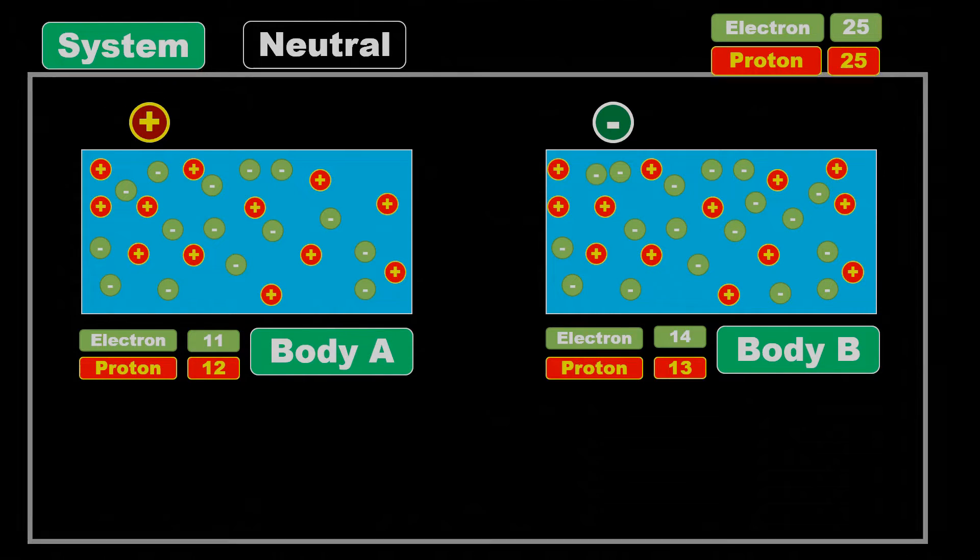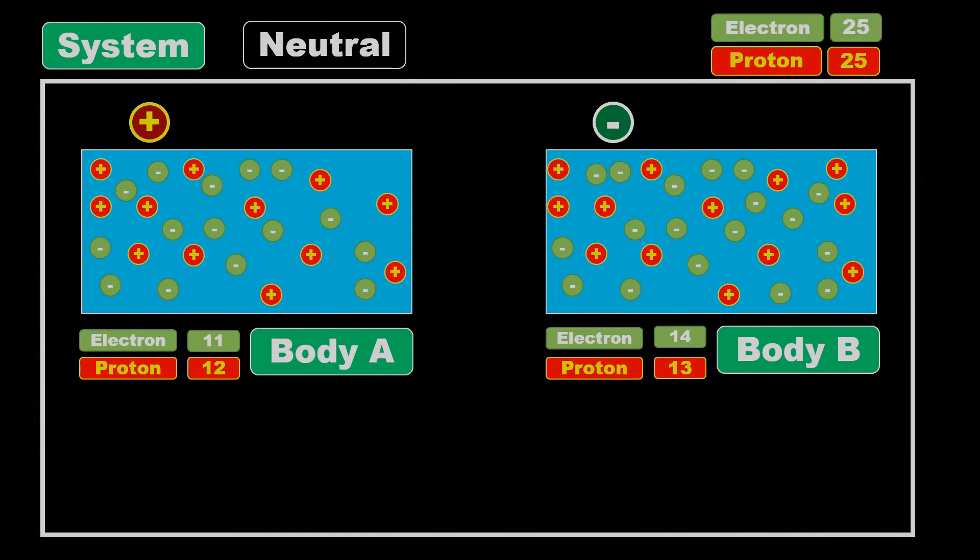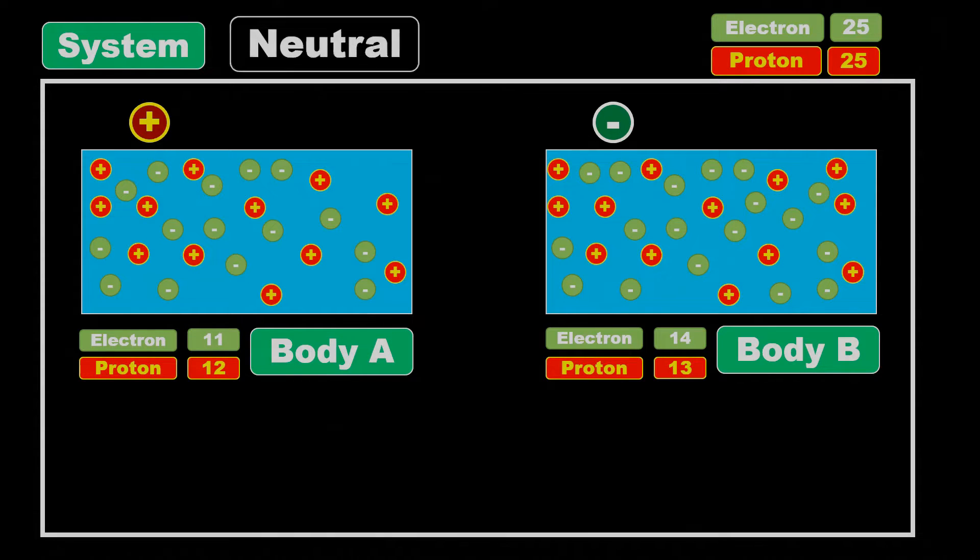However, if you look at the overall system, the total number of electrons and protons is still the same as it was before. We haven't created or destroyed any charged particles, the electrons have just redistributed, and the net charge of our system is still zero or neutral.